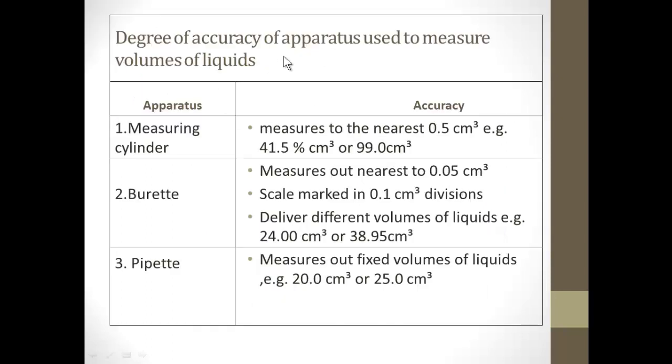Degree of accuracy of apparatus used to measure volume of liquids. Apparatus measuring cylinder has accuracy nearest to 0.5 centimeter cubed. Burette measures out nearest to 0.5 centimeter cubed, while pipette measures fixed volume of liquids such as 20 centimeter cubed or 25 centimeter cubed.